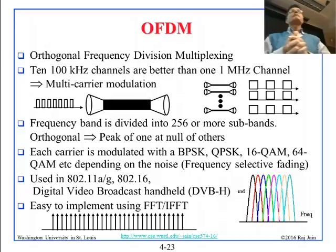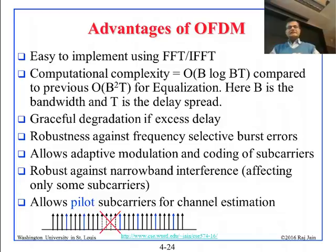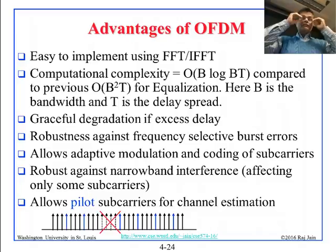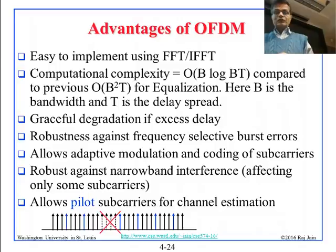The advantages of OFDM: it is easy to implement, and the computational complexity is low compared to the previous method, which was equalization. In equalization, you wanted to make sure all parts of the spectrum were equally amplified.